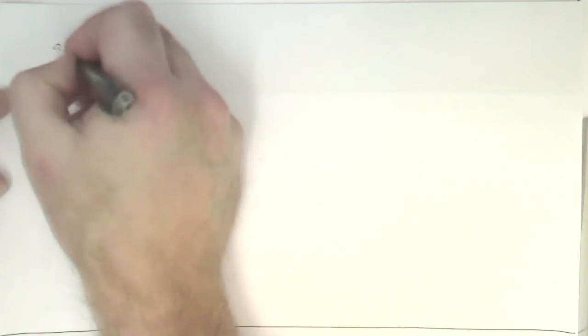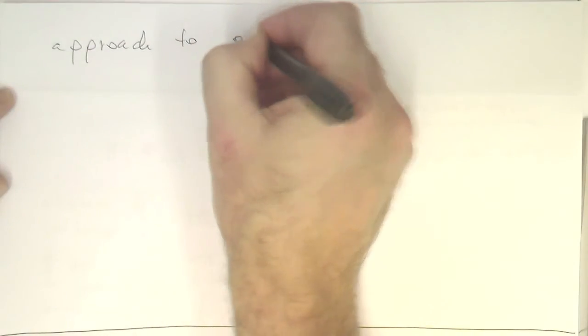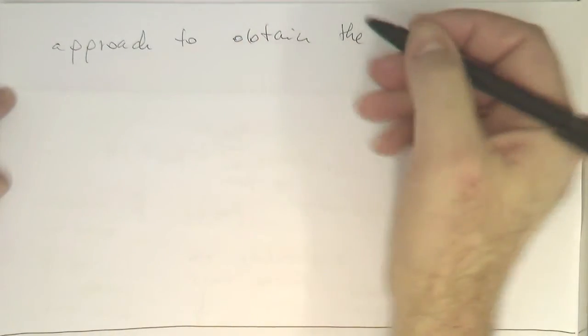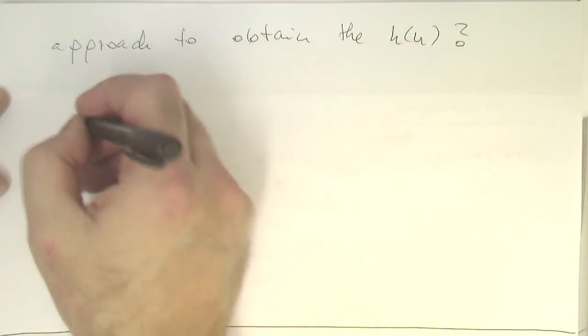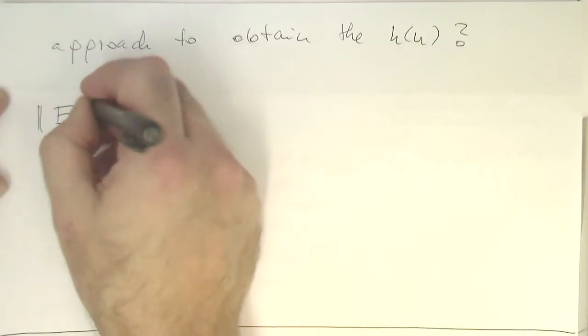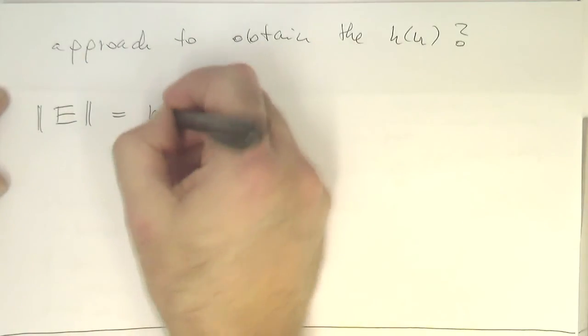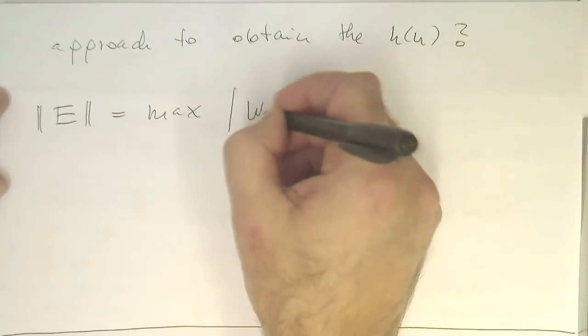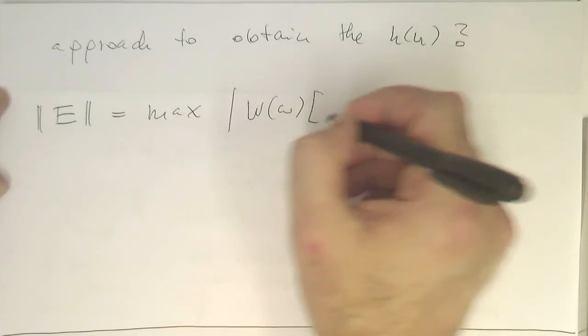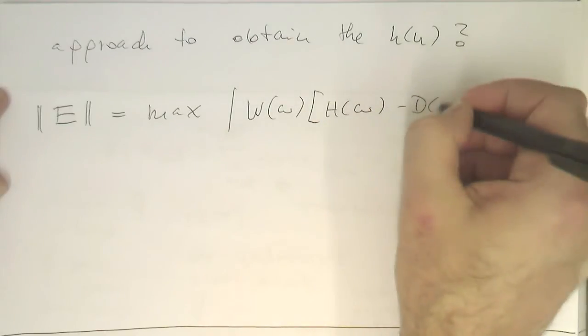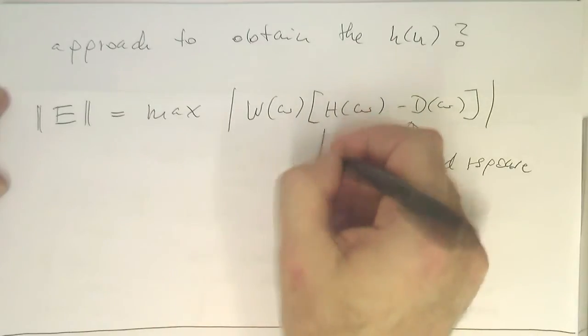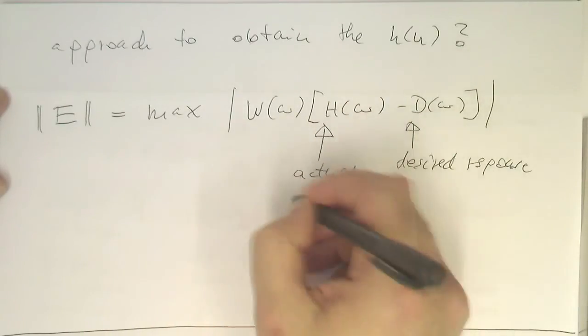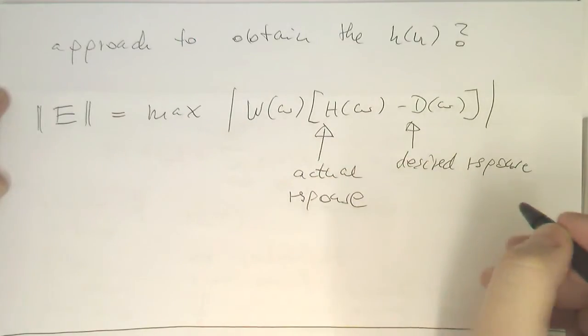What is the approach to obtain the h of n, the impulse response? The way this is done is by this following formula. We define an error, and this error is defined as a maximum of w of omega, multiplied with h of omega minus d of omega. Remember, this is our desired response, and this is our actual response.